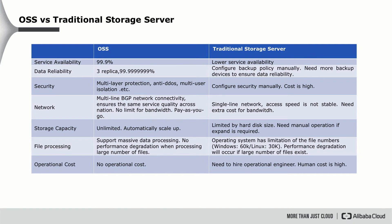For network, OSS provides multi-line BGP network connectivity, ensuring the same service quality across regions with no bandwidth limit, and supports a pay-as-you-go pricing model. Traditional storage servers mostly use single-line or double-line networks, so access speed is not stable — it may be fast from one region but slow from another. Additionally, you need extra cost for bandwidth.